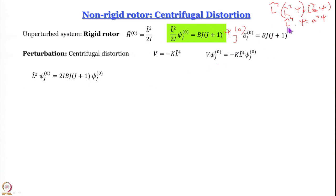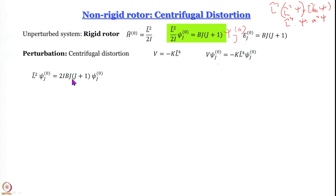To get the eigenvalue of L⁴, we make another L² operate. The constants 2IB and j(j+1) come out, and L² operating on ψ_j⁰ gives another factor of 2IB·j(j+1). So V·ψ_j⁰ = −k·L⁴·ψ_j⁰ = −4kI²B²·j²(j+1)²·ψ_j⁰.